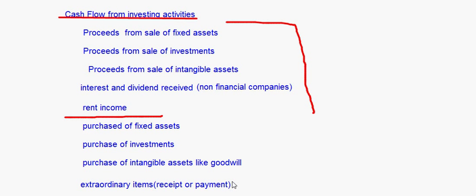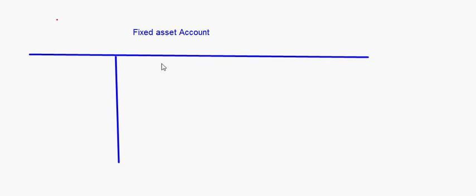Now let's take up a small example for investing activities. When you take up questions on investing activities, you have to prepare ledger accounts for some of the items because there is some missing information in investing activities, and you have to find out that missing information. Before taking up a question, I'll tell you the format for the ledger accounts, which is very important.